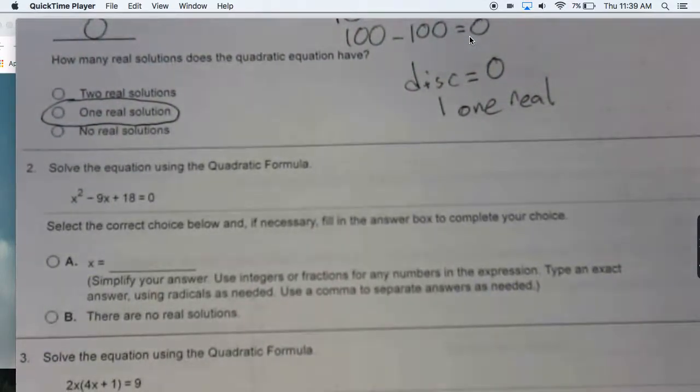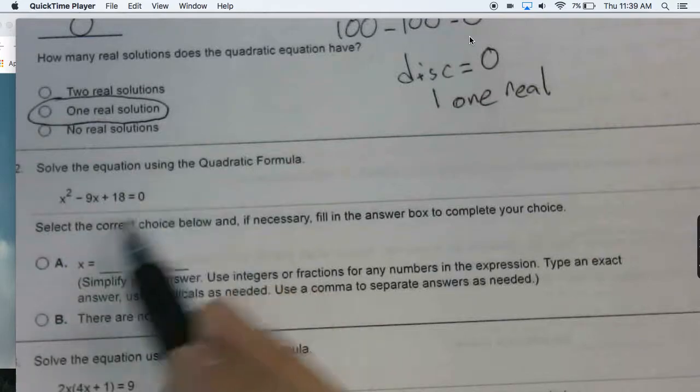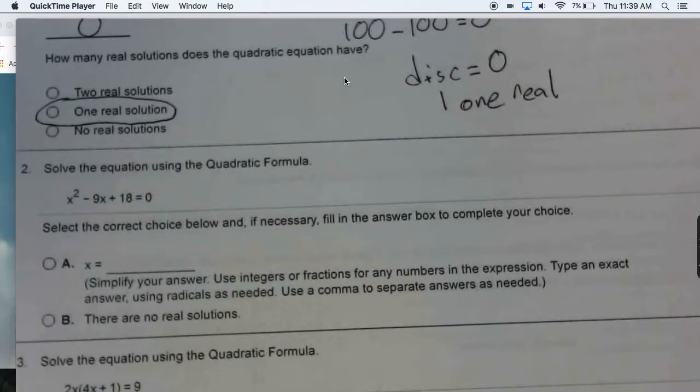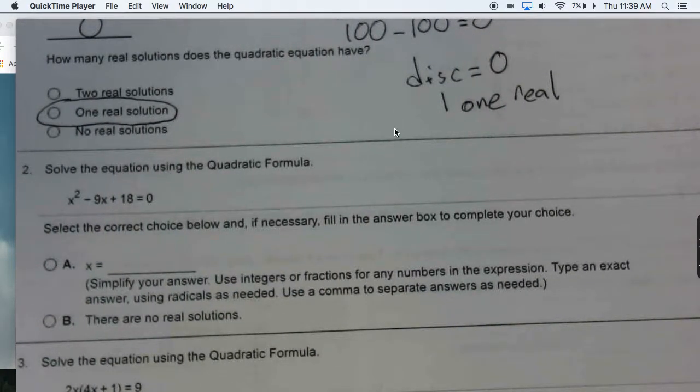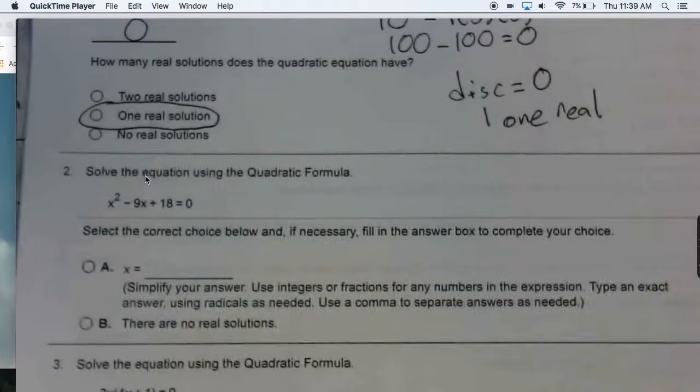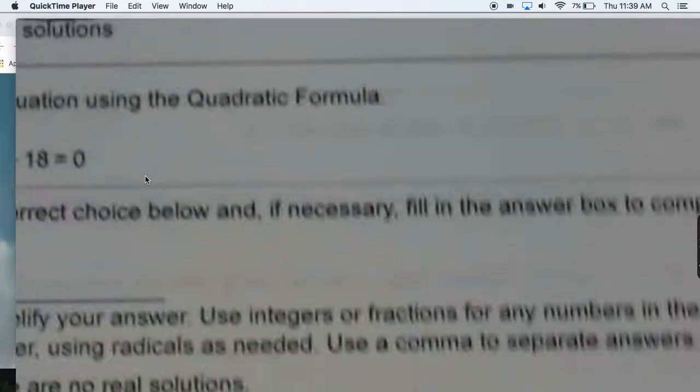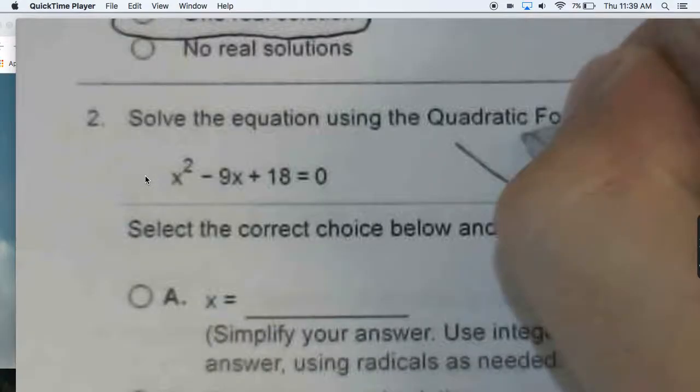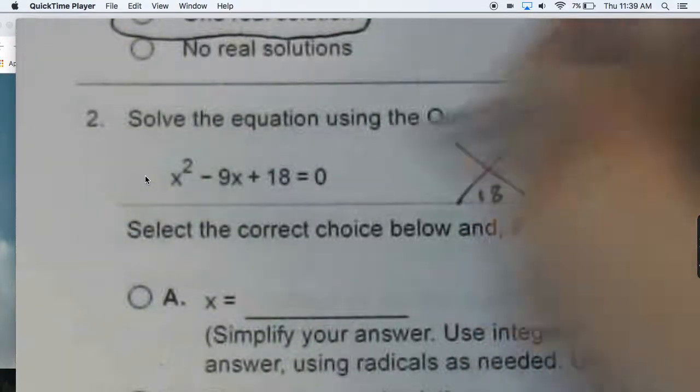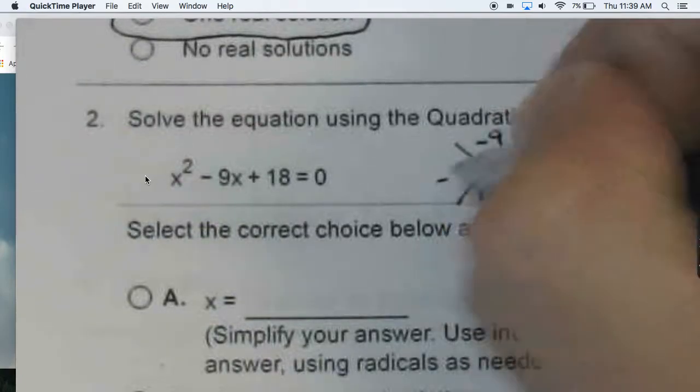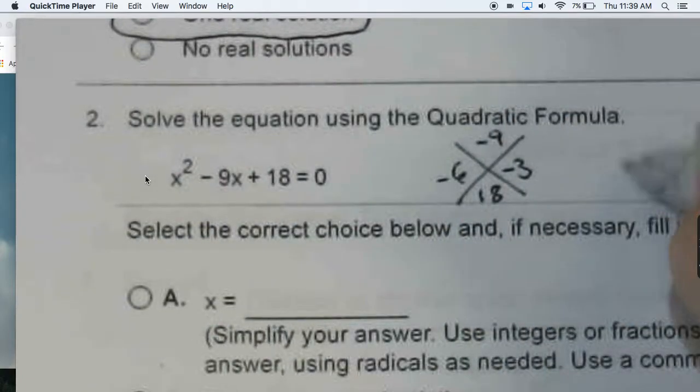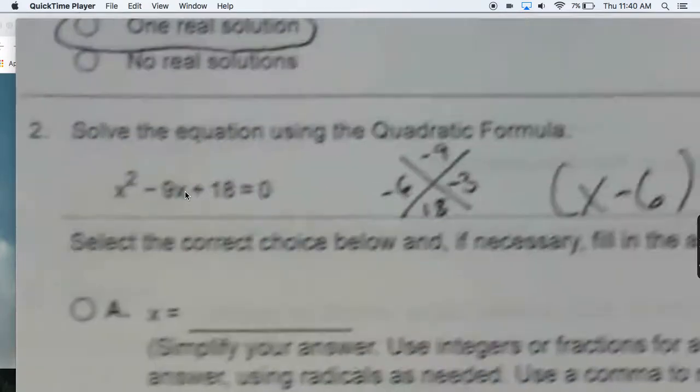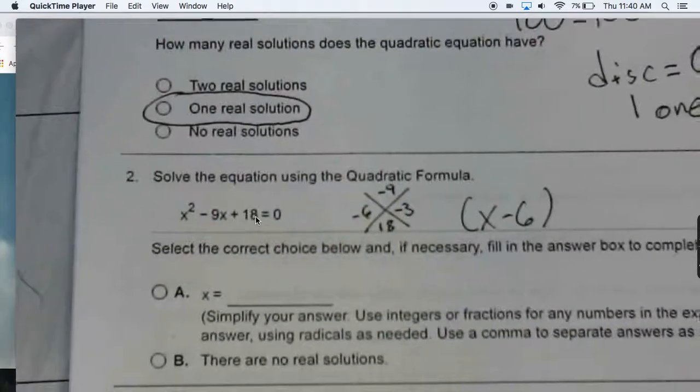Although we could solve this with quadratic formula, you'll notice if you look very closely, this is definitely a trinomial that can be factored using diamond method. If you're not convinced, try it out. You would have a product of 18. Your sum is negative 9, negative 6, and negative 3 work here.